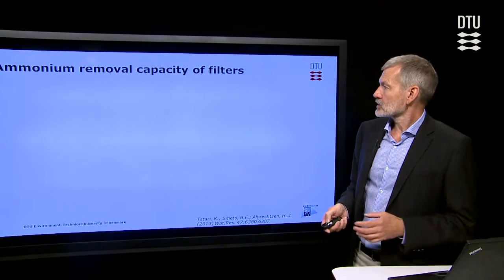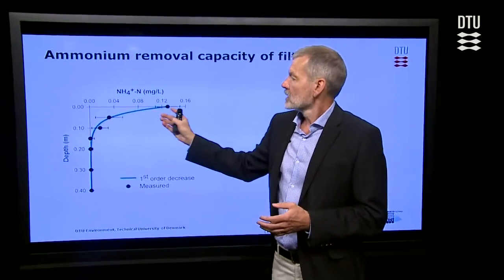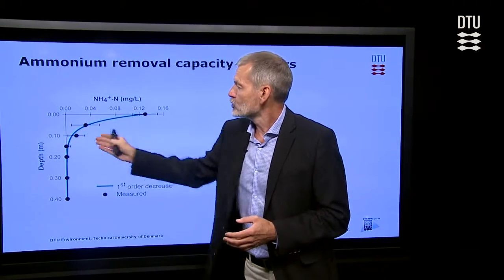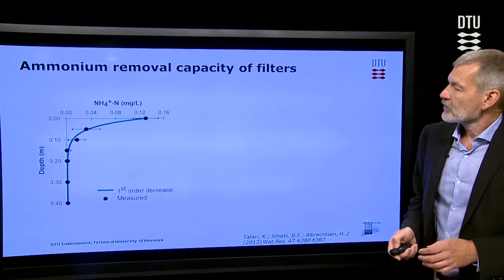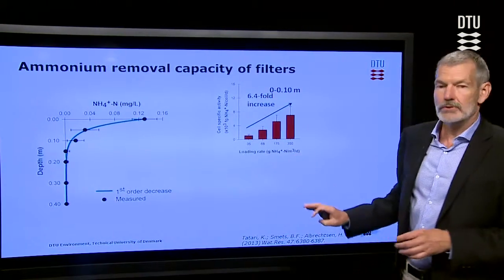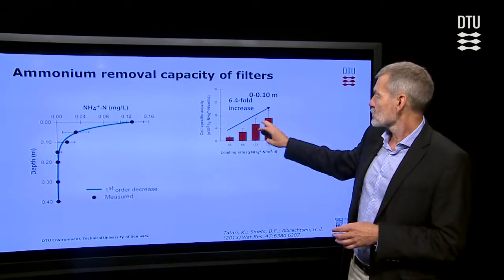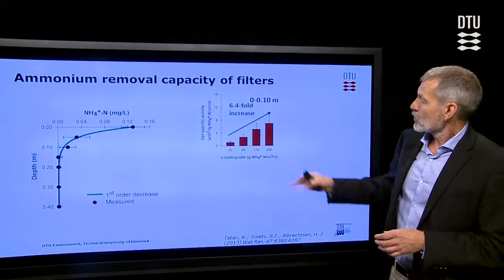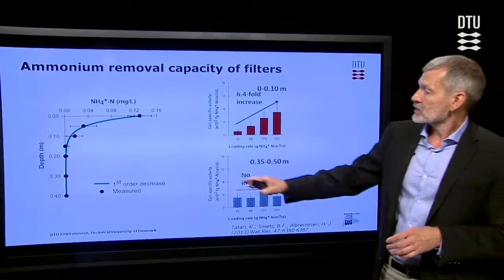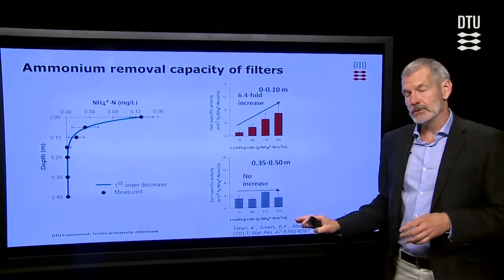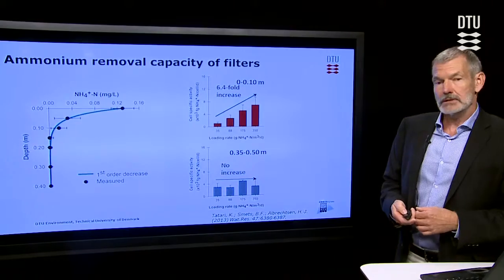If we look at the ammonia oxidation and removal process, one way is to look at how the concentration develops down through the filter. You can see the concentration going down — the ammonia being removed in the top of the filter. You could ask, what about the lower part? Is that a surplus capacity? We investigated that. We took filter material from the top, brought it into the laboratory, and increased the ammonia load for a short time. We saw that when we did that, we also increased the ammonia oxidation rate — so yes, in the top there was a potential for increasing the rate. But if we did the same investigation with the lower part and increased the load, there was no reflection of that in the activity — so there was no potential for further capacity in the lower part of the filter.